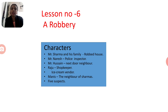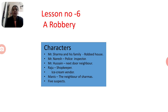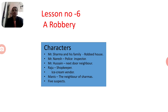Mr. Hussain is the witness who stayed next door, the neighbor of Mr. Sharma. The second witness is Raju, the shopkeeper. The third witness is the ice cream vendor. The fourth witness is Mr. Money and Mrs. Money, the neighbors of the Sharmas.